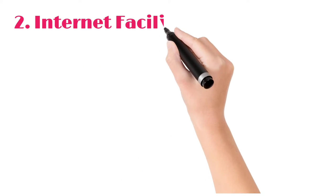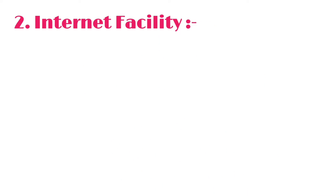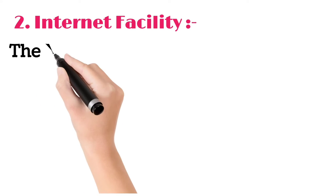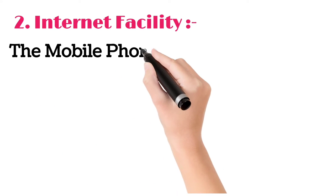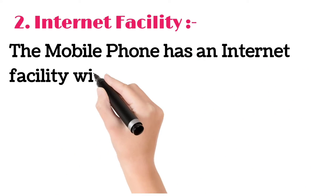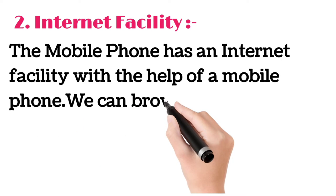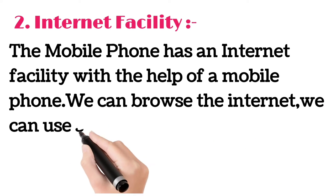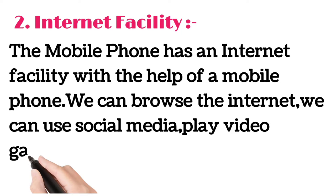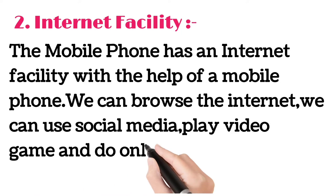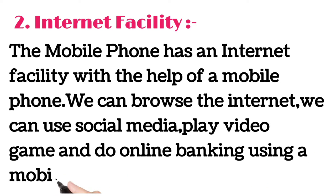Internet facility: The mobile phone has an internet facility. With the help of a mobile phone, we can browse the internet, we can use social media, play video games, and do online banking using a mobile phone.